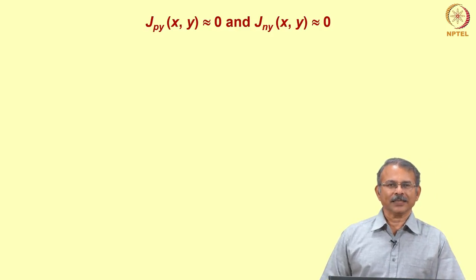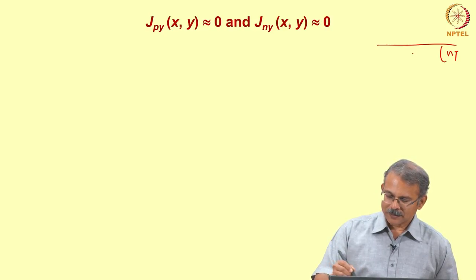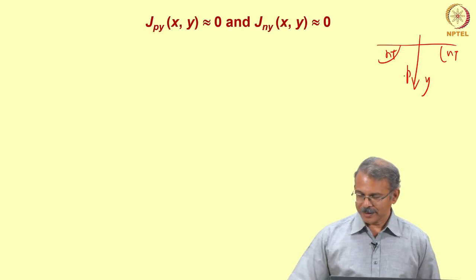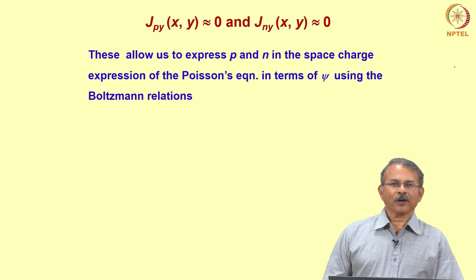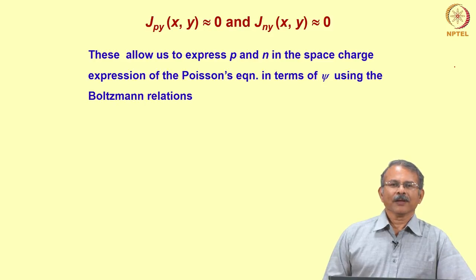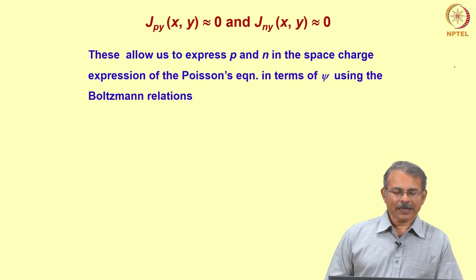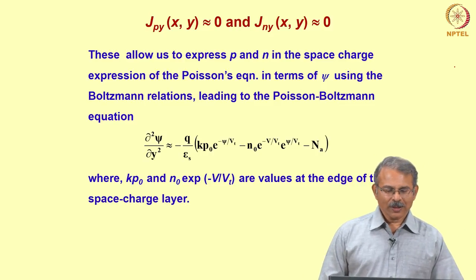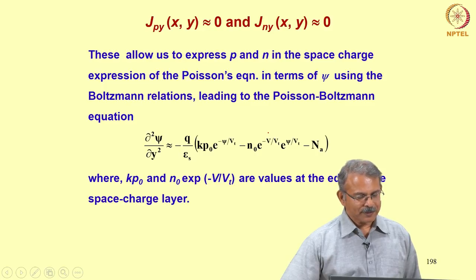These approximations allow us to express carrier concentrations p and n in the space charge expression of Poisson's equation in terms of ψ using the Boltzmann relations, giving the Poisson-Boltzmann equation. The exponential terms in the equation result from this Boltzmann relation approximation. The consequence is that k·p0 and n0·exp(−V/Vt) are values at the edge of the space charge layer. The Poisson-Boltzmann equation, written under the gradual channel approximation, when integrated gives the total silicon charge qs as a function of ψs and channel voltage.